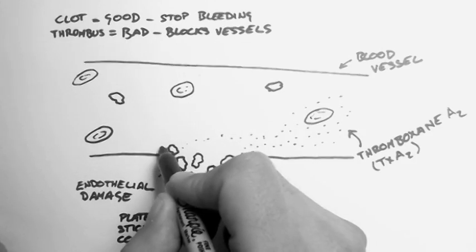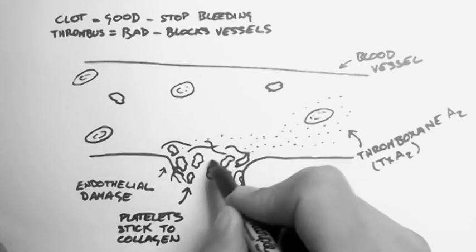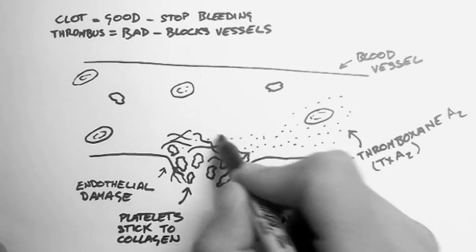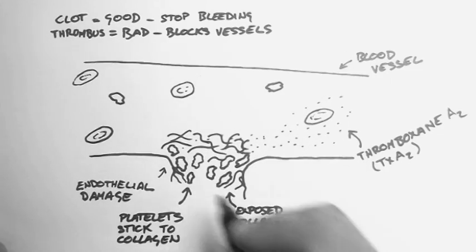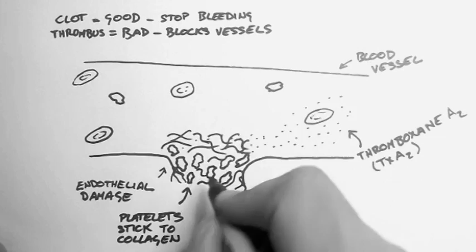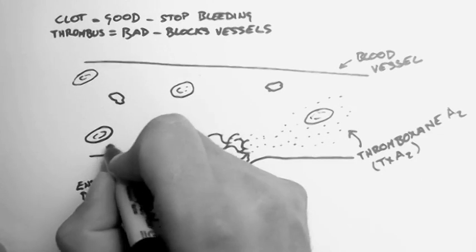Then, on top of the platelets, we get a bunch of proteins called fibrin. And they're basically big fibrous strands that help make the blood clot, and they stick the platelets together.